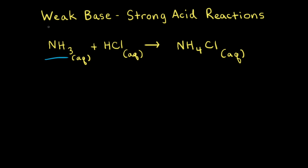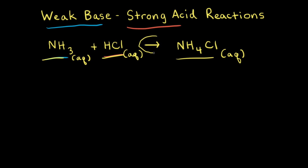Ammonia is an example of a weak base, and hydrochloric acid is an example of a strong acid. Ammonia reacts with hydrochloric acid to form an aqueous solution of ammonium chloride. Because this is an acid-base neutralization reaction, there's only a single arrow going to the right, indicating the reaction goes to completion.